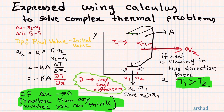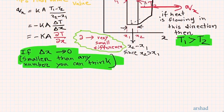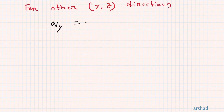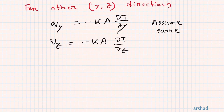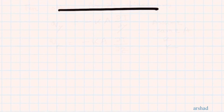For other directions we can similarly write Q_Y equals minus K times A times the partial derivative of T with respect to Y, and likewise for the Z direction. These equations assume that the cross-sectional area and thermal conductivity do not vary.